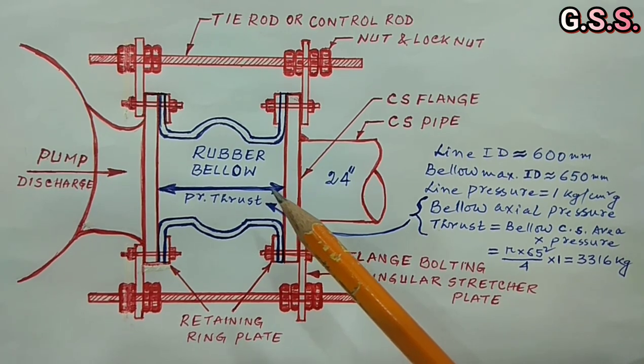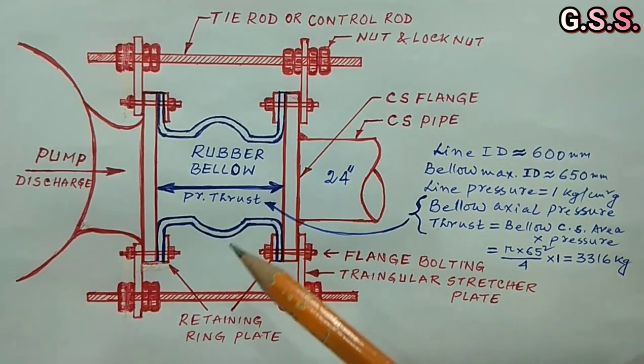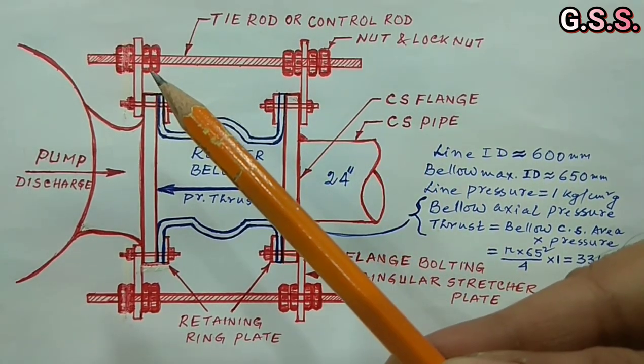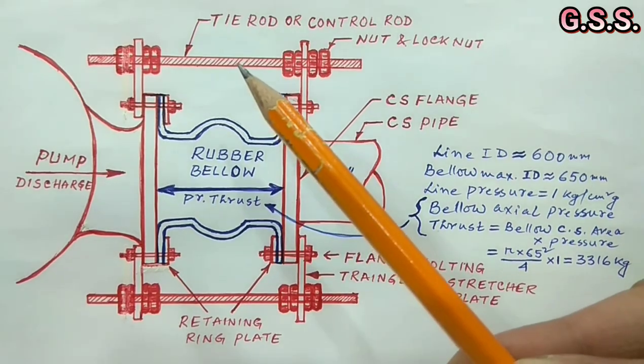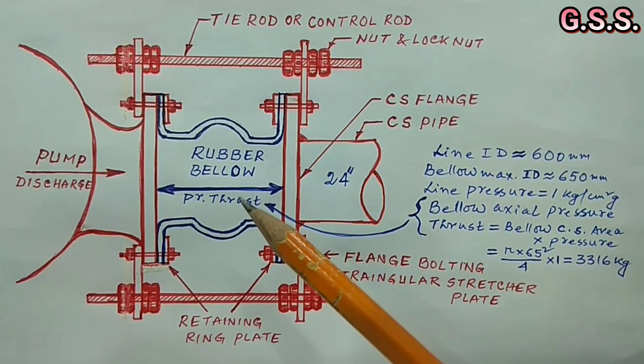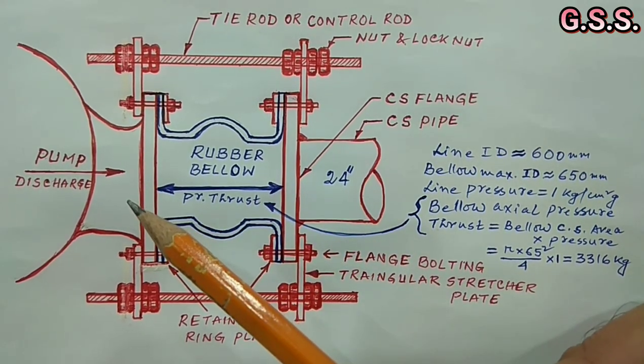But since two tie rods are kept tight with nuts and lock nuts, this pressure thrust will be absorbed by these two tie rods and no load will be transmitted to piping system or to connected pump nozzle.